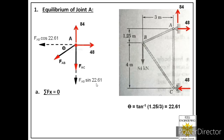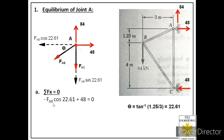Applying ΣFx = 0 for joint A: the forces in the X direction are 48 kN (positive, rightward) and FAB cos 22.61° (negative, leftward). So: −FAB cos 22.61° + 48 = 0, giving FAB = 52 kN.